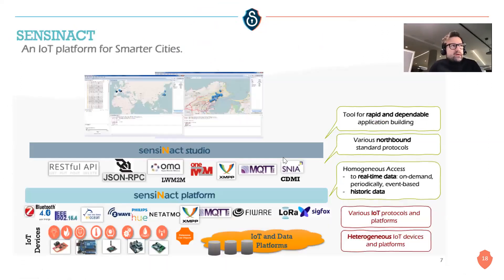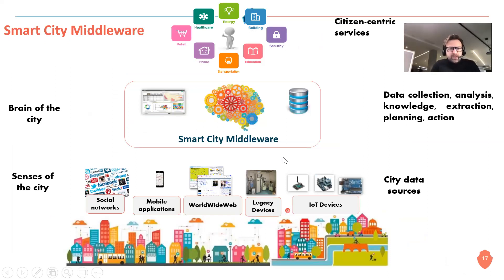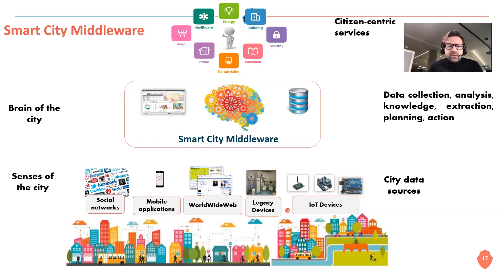What is the smart city today? In cities, we have many types of data sources: social networks, mobile applications, crowdsourcing applications, the World Wide Web, legacy devices, and an increasingly growing number of IoT devices. All of those are the senses of the city. What we need is the brain of the city — where we process data, extract high-level knowledge, and plan and react to the dynamically changing context. This is ultimately for serving citizens, building applications across domains like energy, healthcare, and retail. The middleware level sits in this middle layer.